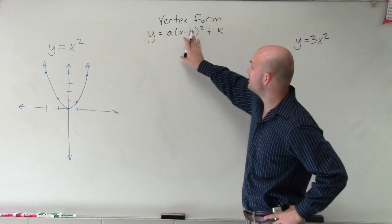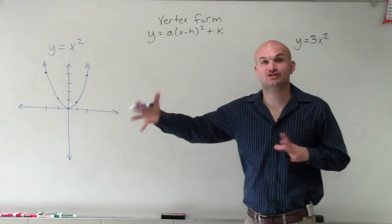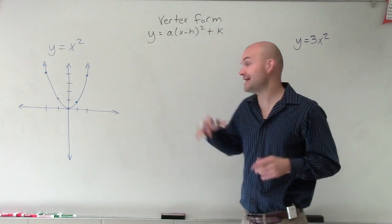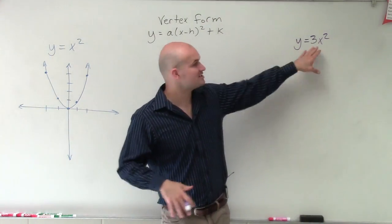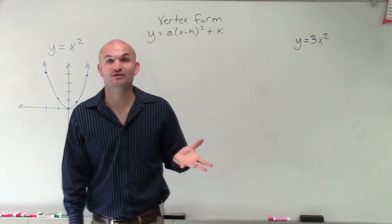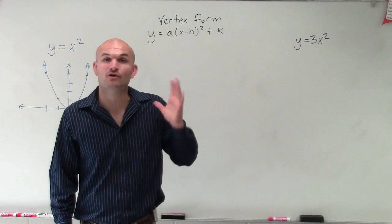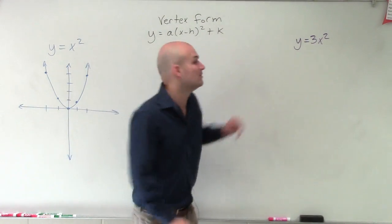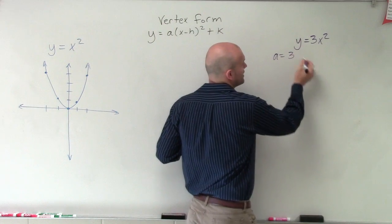Now, when looking at this, we know that h and k, remember, that shifts are graphed left and right and up and down. So when we look at our equation that we want to graph, y equals 3x squared, we notice that we're not shifting this graph left or right or up or down as h and k are both 0. However, we do know that a equals 3.